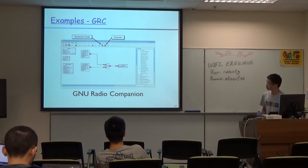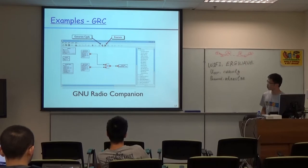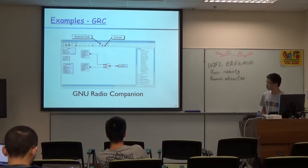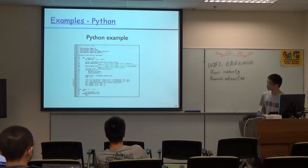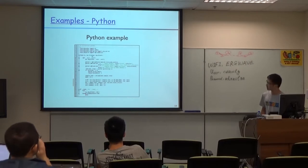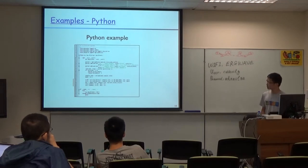Here is an example of GRC. You have this tool with many blocks on the side. You drag blocks to the canvas, connect them with lines, click a button to auto-generate the code, and click another button to start the application — that is the GRC programming method. You can also write it in Python: define a top block as a flow graph, define two blocks, connect them together, and in the main function just call start and run — the application is started.